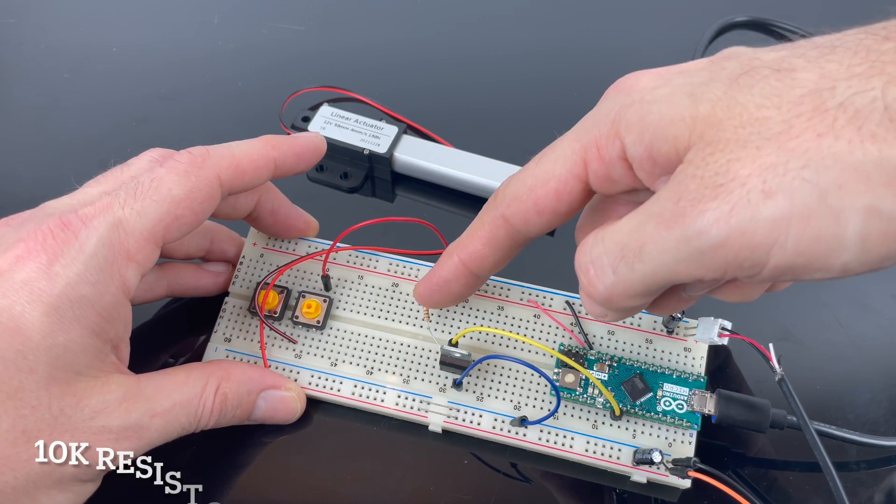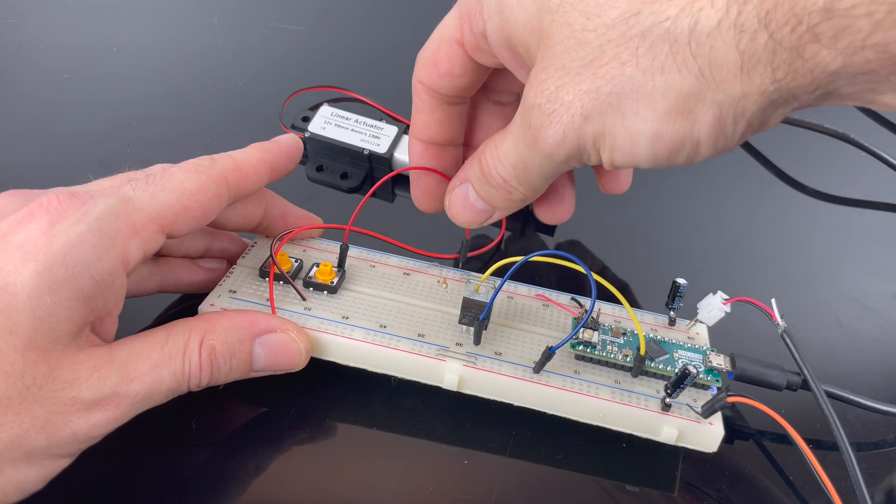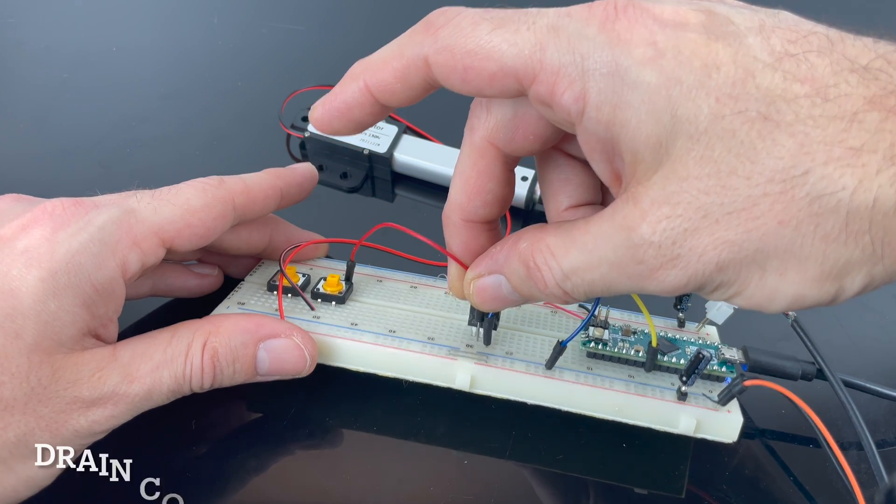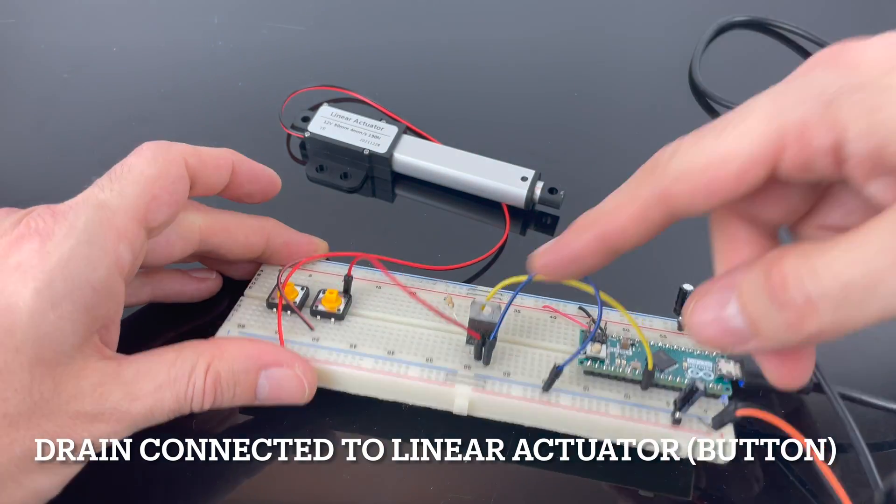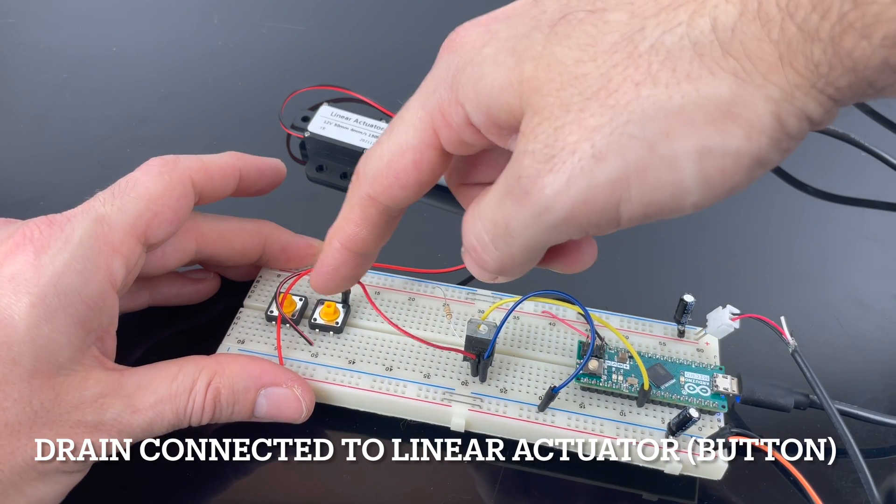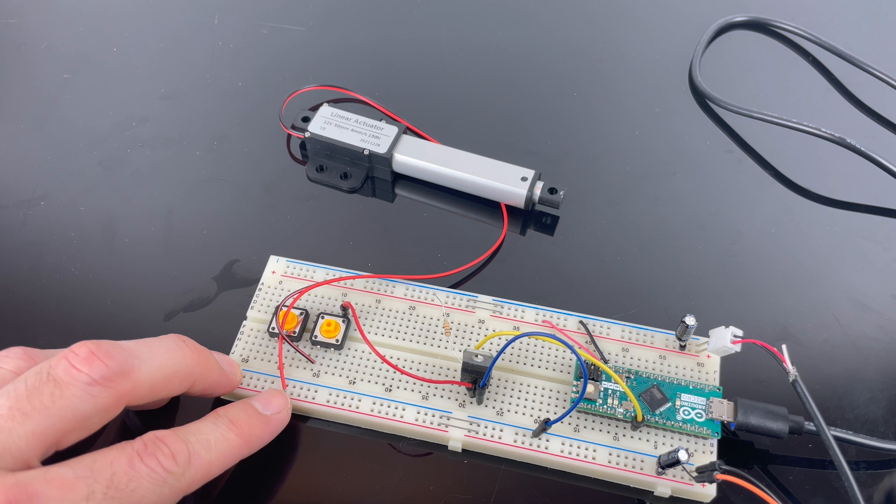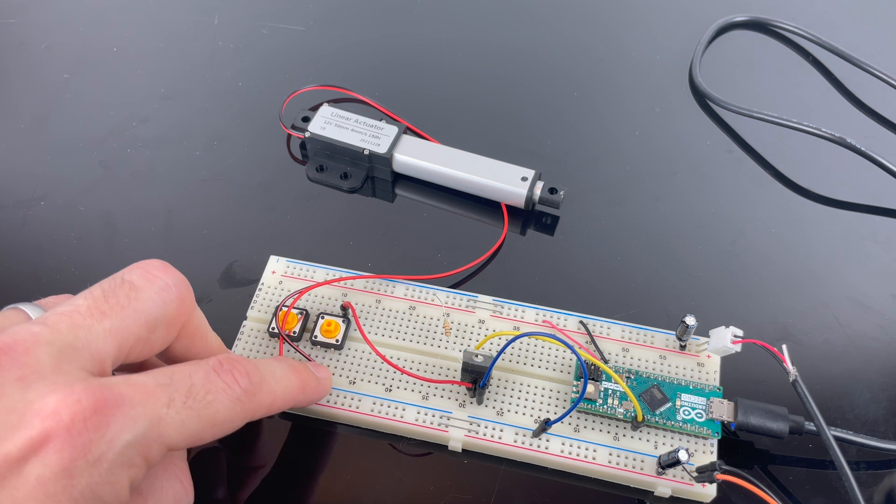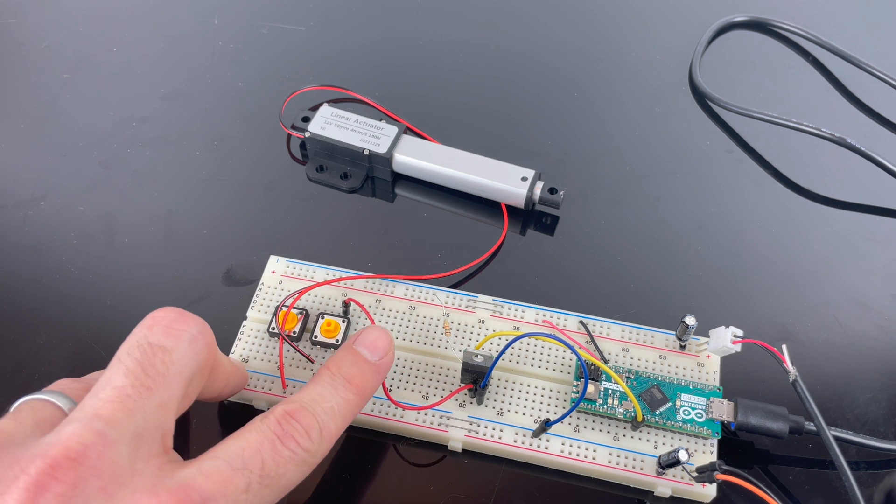Now we also have a resistor here which is 10k and the last pin that we connect is the middle one and we connect that to the actuator. Actually it's connected to the button which is connected to the actuator. The actuator is connected to the 12 volts on this side here and then the ground is connected to one side of the button.